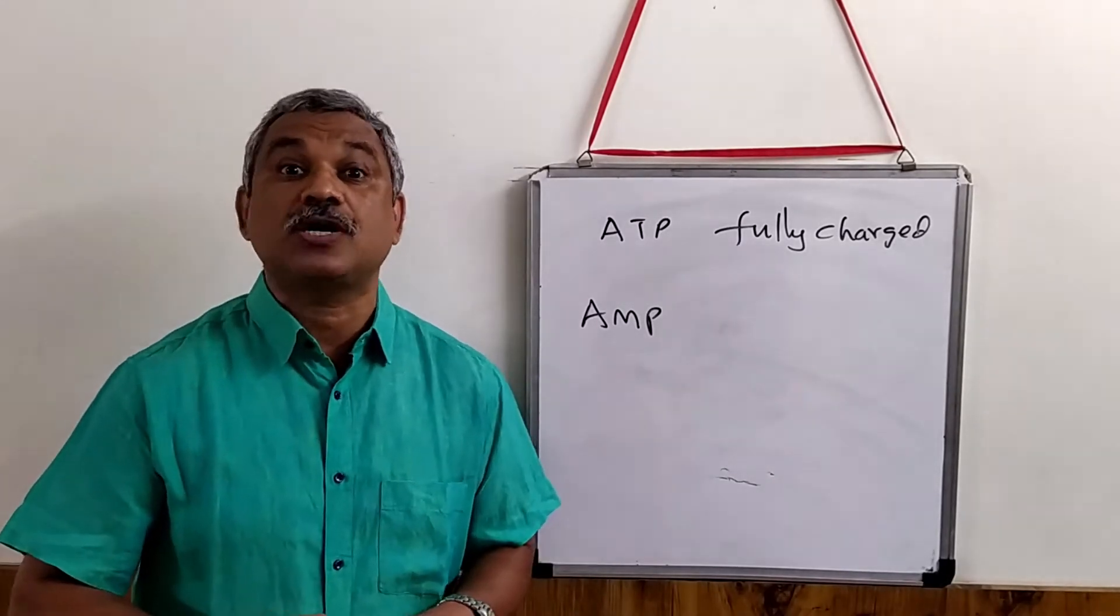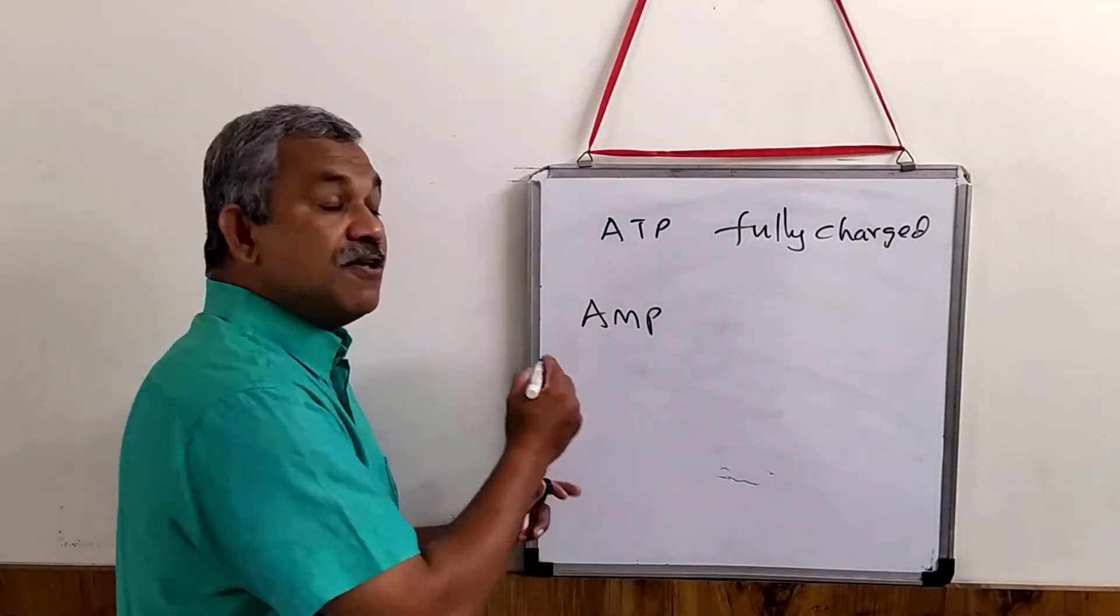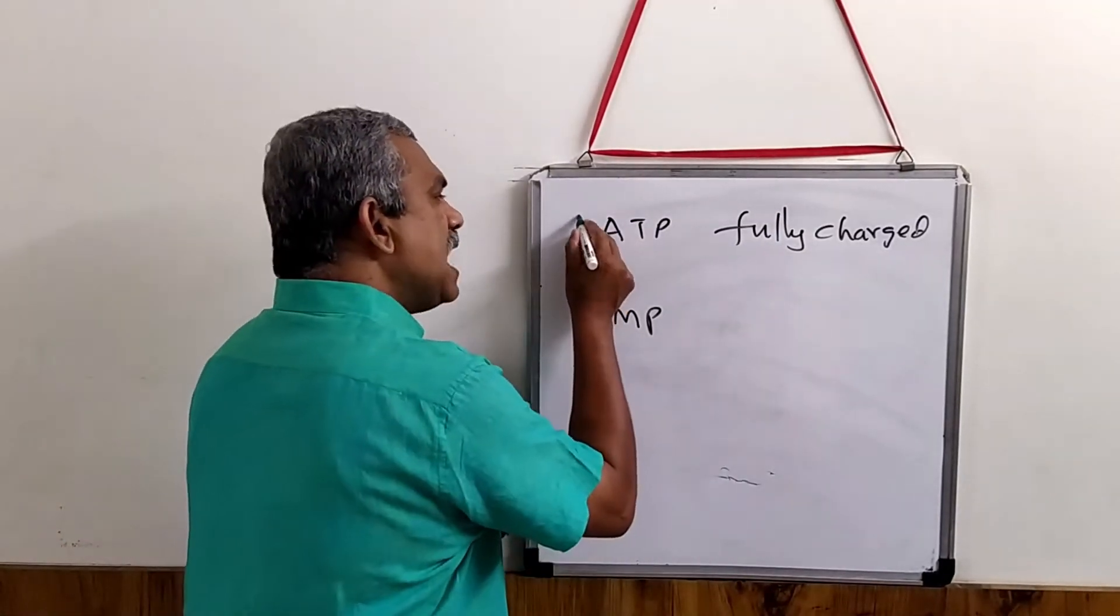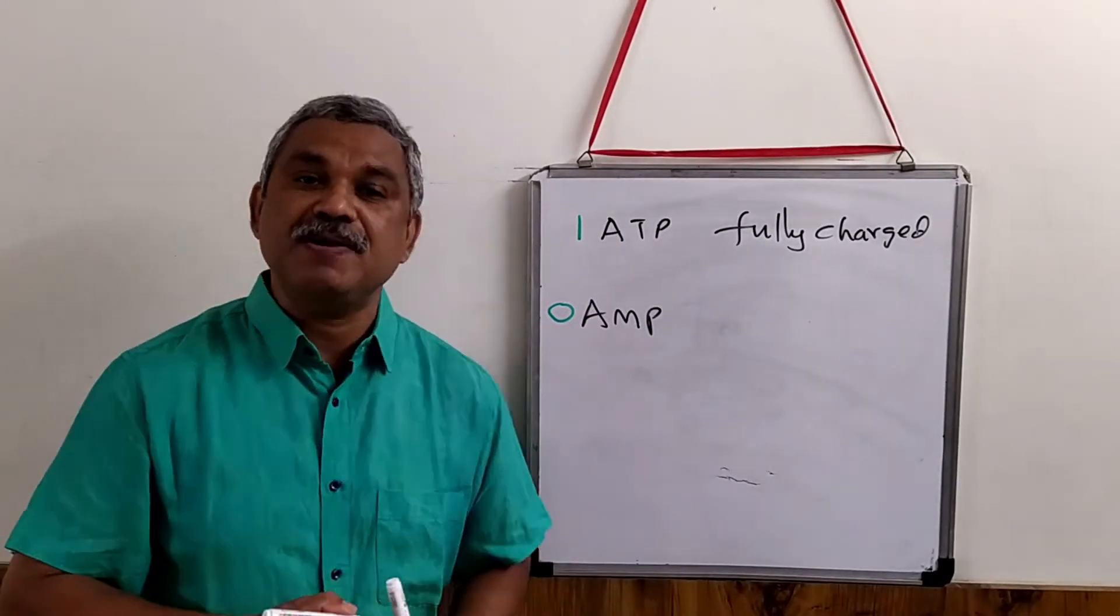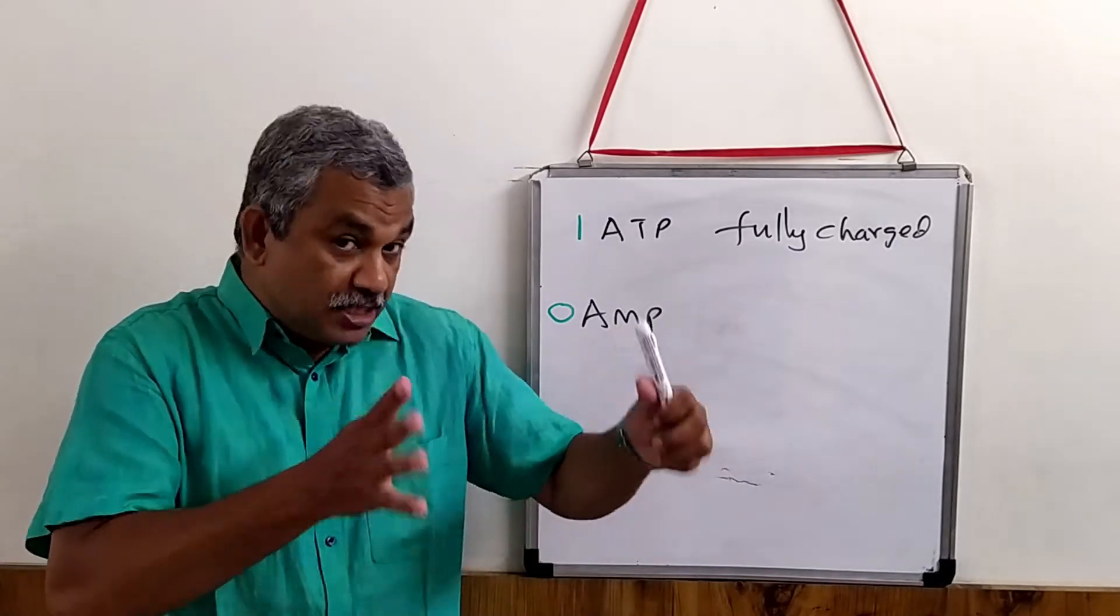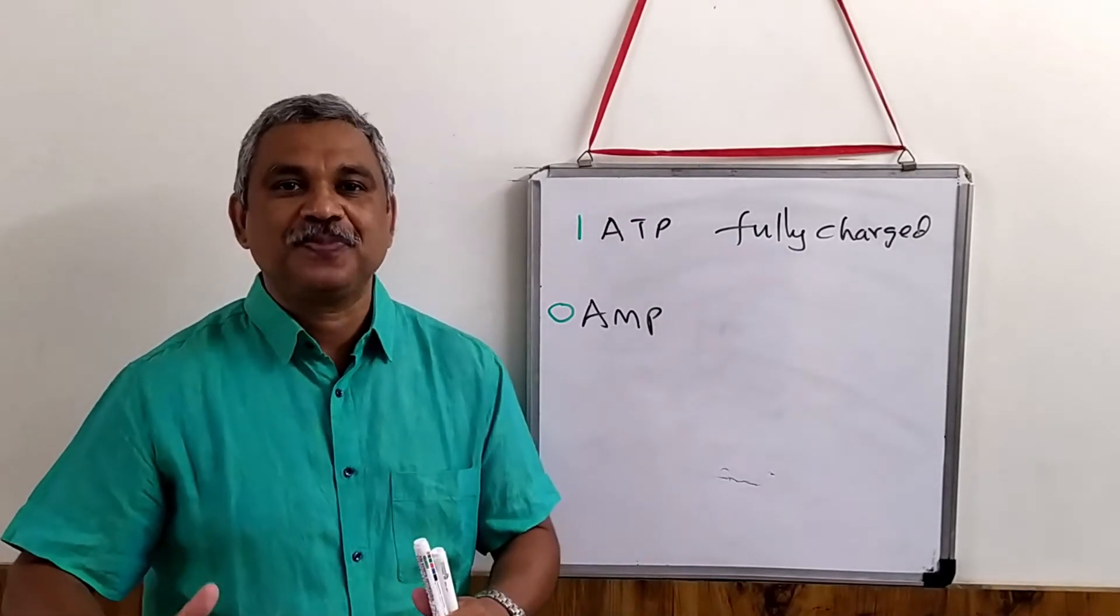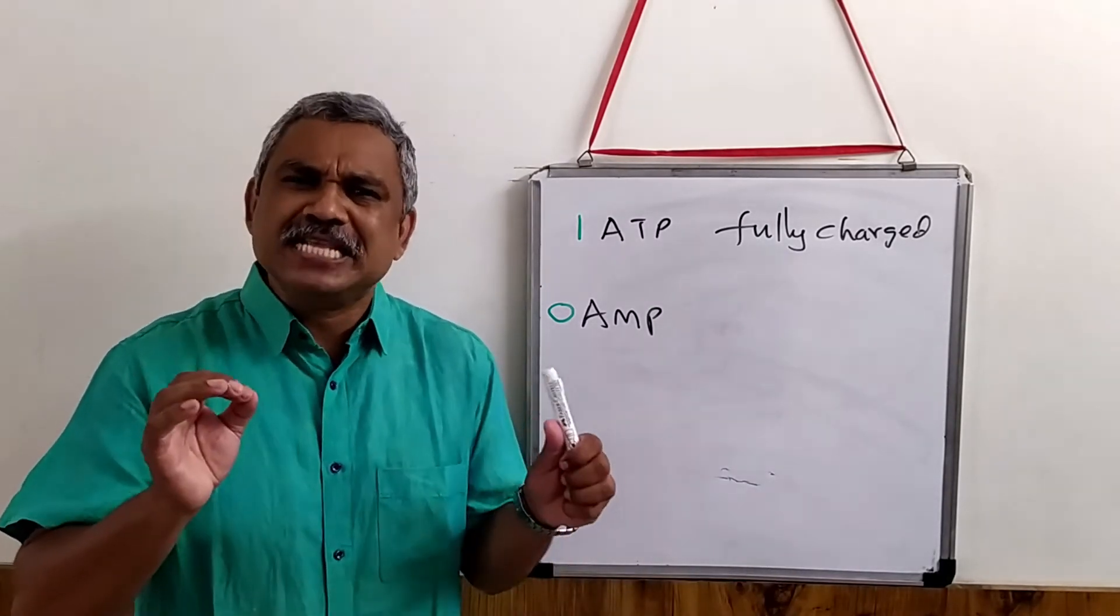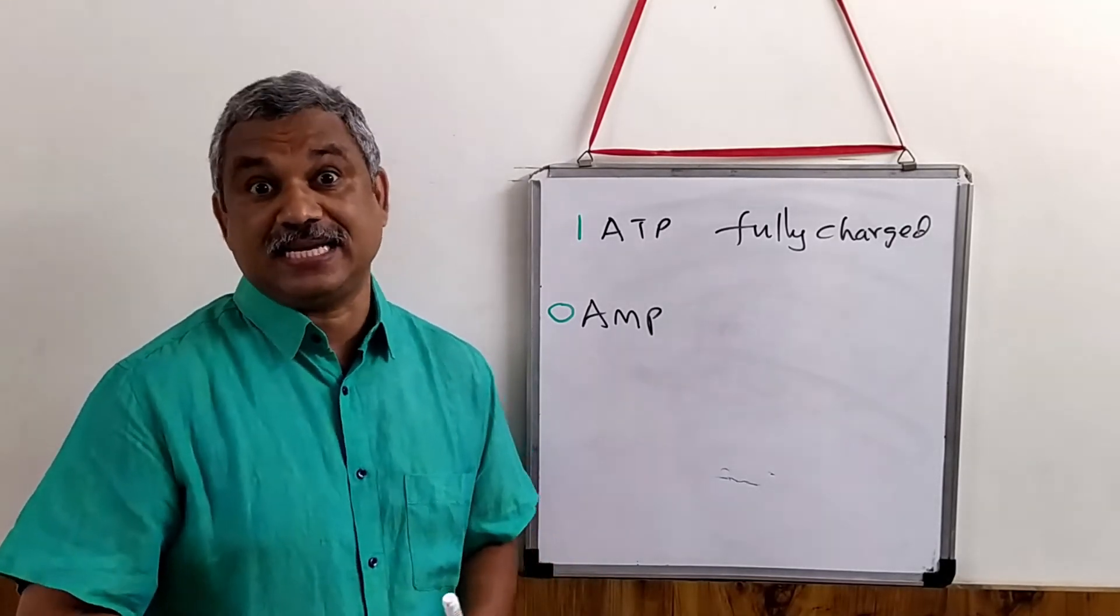In such a case, what we do is, when a cell is full of ATP, we assign a value of 1. And when a cell is full of AMP molecules, we assign a value of 0. Which means, the adenylate energy charge will vary from 0 to 1. That is what it means.